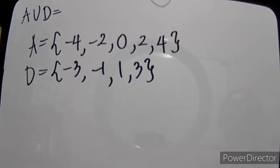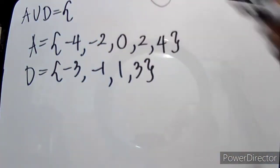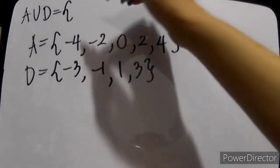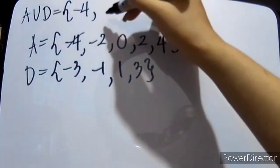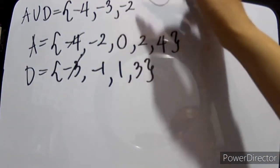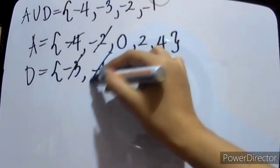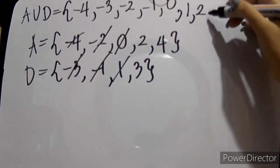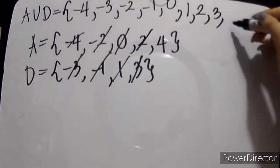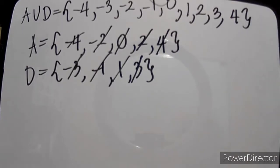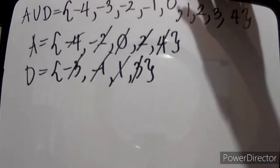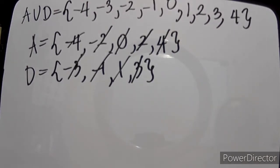Since this is union, we combine them. Writing all elements in increasing order inside braces: {negative 4, negative 3, negative 2, negative 1, 0, 1, 2, 3, 4}. That is the A union D.